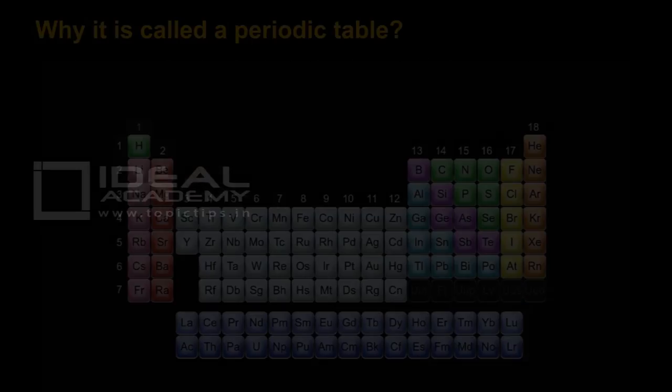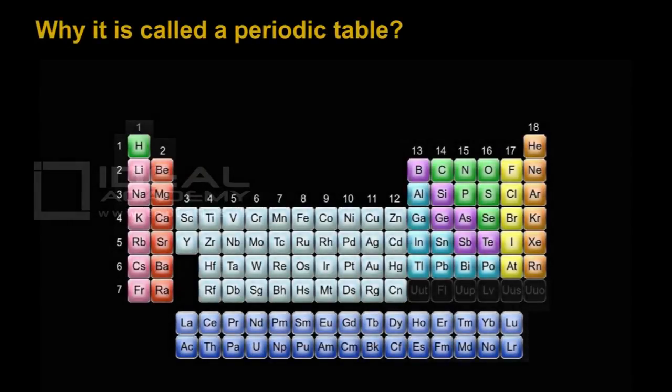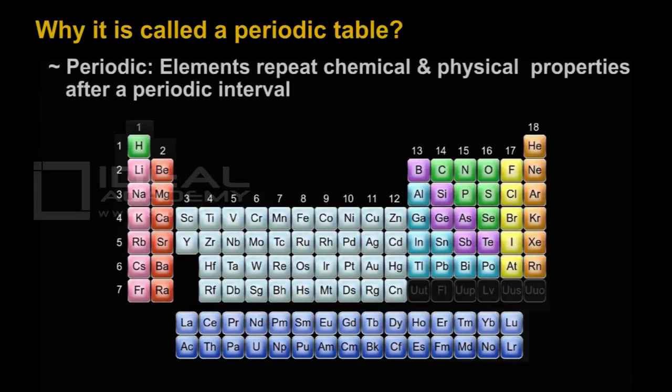Let's see why it is called periodic table. It is called periodic because elements repeat chemical and physical properties after a periodic interval.